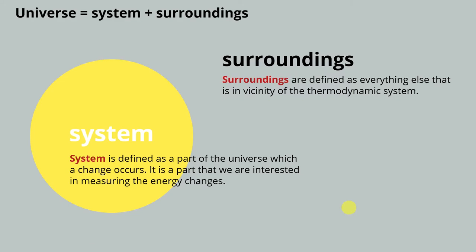Let's start with the thermodynamics terms. If we want to study energy change, we have to specify what we are interested in, and that is called a system. A system is defined as a part of the universe in which a change occurs — it is the part that we are interested in measuring the energy changes. Everything else in the vicinity of the system is called surroundings, defined as everything that is in the vicinity of the thermodynamic system.